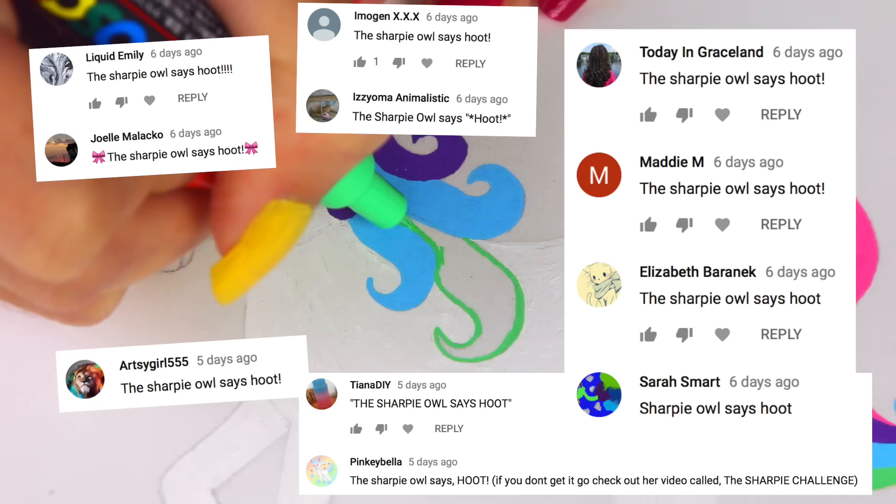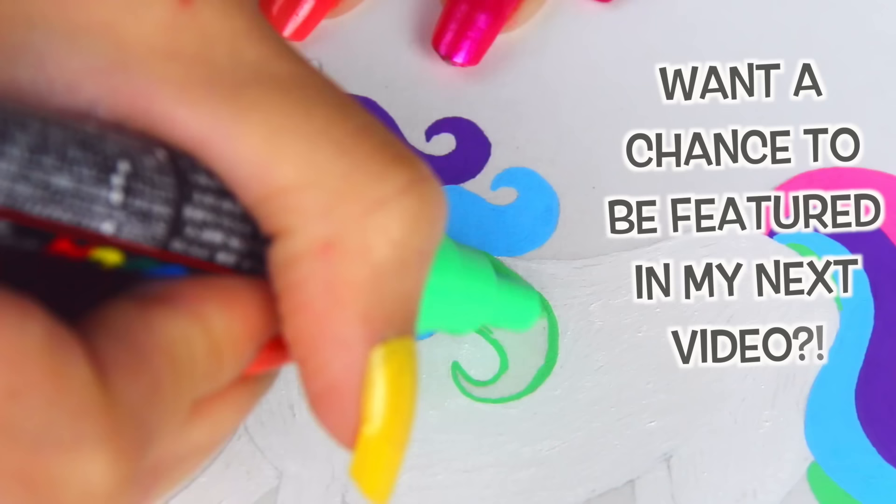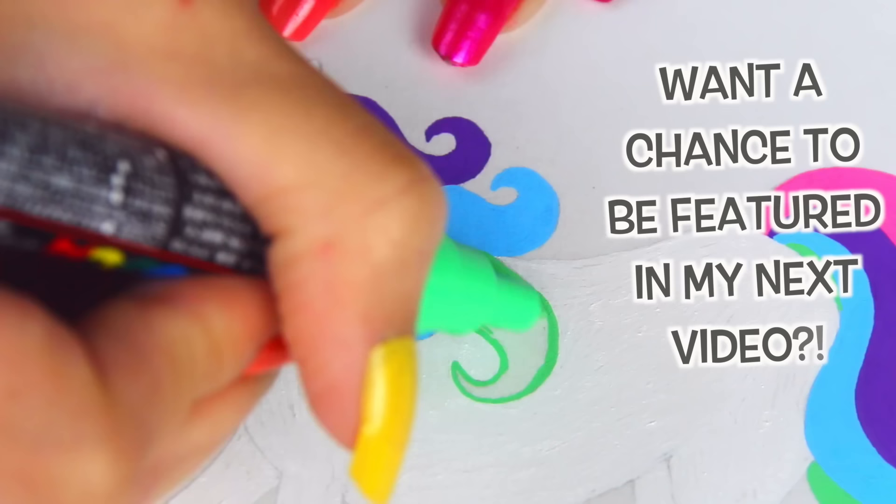If I were using Crayola markers here or Sharpie or Copics even, like if you go out of the lines, that's it for the most part. But yeah, with these, you can cover up mistakes. So that's definitely a plus.